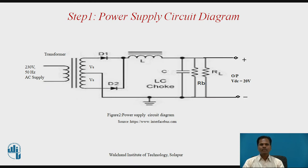In Step 1, we decide the overall circuit diagram for the required unregulated DC power supply. The circuit diagram consists of a transformer with center tap secondary and two diodes D1 and D2 — making it a full-wave rectifier. Inductance L is connected in series with the load resistor, and capacitor C is connected in parallel to the load resistor. Bleeder resistor RB is connected in parallel to the capacitor and load resistor. The transformer provides the required AC voltage at the input of the rectifier circuit as per the output DC voltage and current requirements.